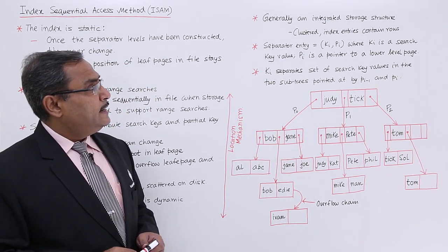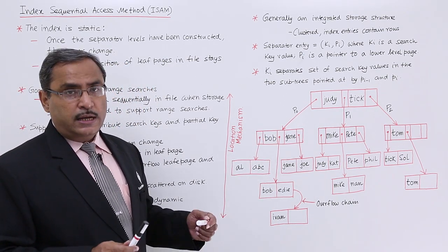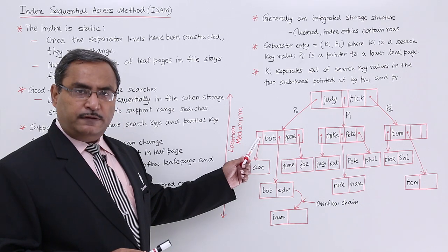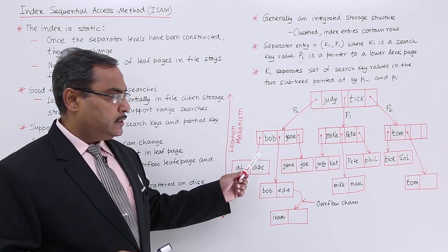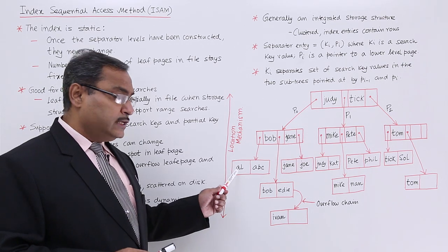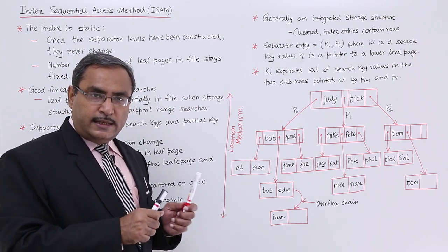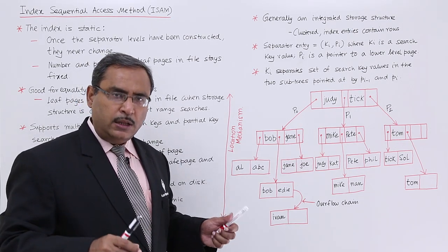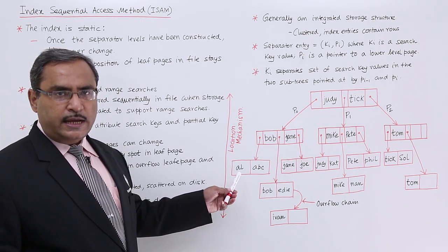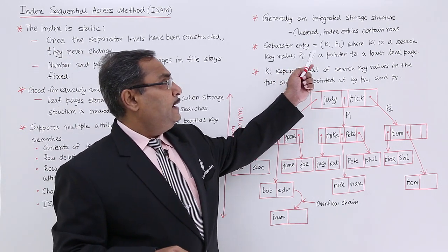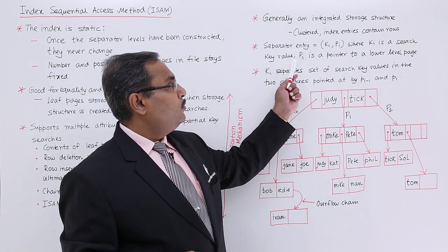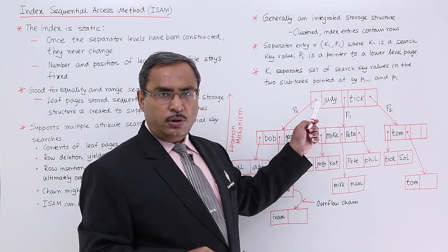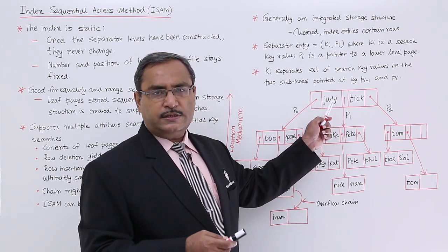Now generally an integrated storage structure, it is clustered index entries can contain rows. Here we are having this respective pointer. I am pointing to this key values and with this key the respective row will get connected because this is the key values, but other non-key attributes will be there in the respective tuple. They will get referred and reference from this key values. Separated entries that is KI PI where KI is a search key value, PI is a pointer to the lower level page. This is my P0, this is K0, here it is P1.